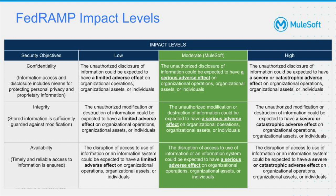FedRAMP categorizes cloud service offerings into one of the three impact levels: low, moderate and high. The impact levels are based across three security objectives — confidentiality, integrity and availability — following the Federal Information Processing Standards or FIPS 199 standards.